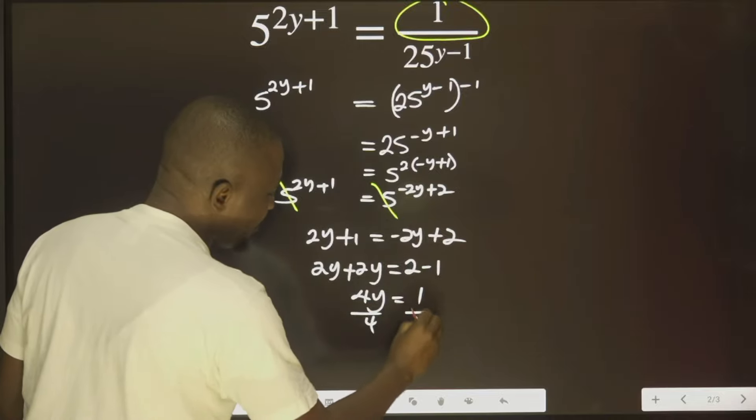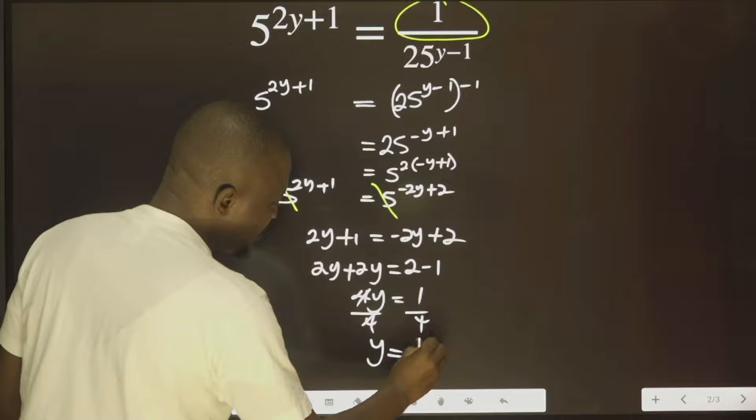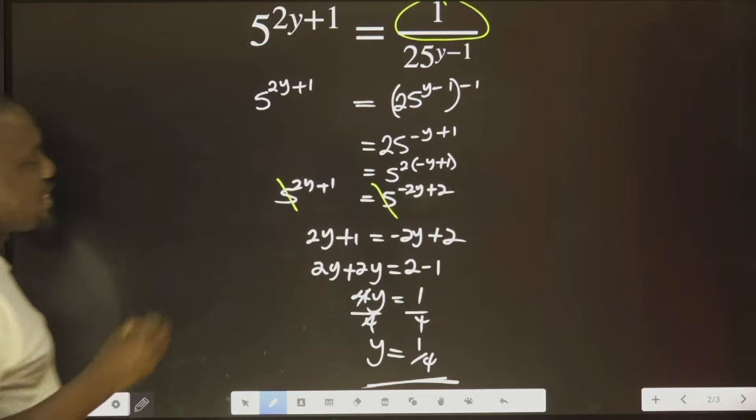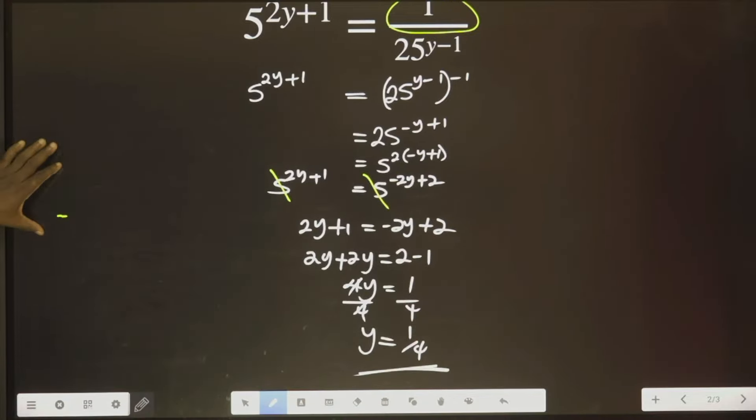Divide both sides by 4. You agree with me? I'm going to have y equals to 1 over 4. So this is the answer. Hope you understand this. Thank you for joining.